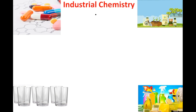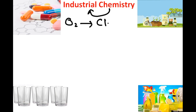Now we have industrial chemistry. As the word shows, we study the chemistry that is used in industry. In industry, we prepare different types of products and chemicals. For example, oxygen is prepared for patients for respiration purposes. Chlorine is used for the purification of water and for killing insects.